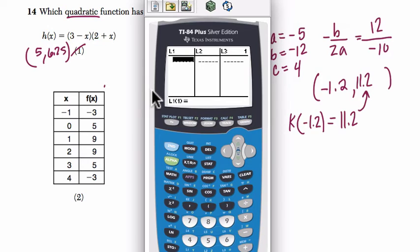So here, I enter my x values. We have negative 1, 0, 1, 2, 3, 4. Our y values, negative 3, 5, 9, 9, 5, negative 3.